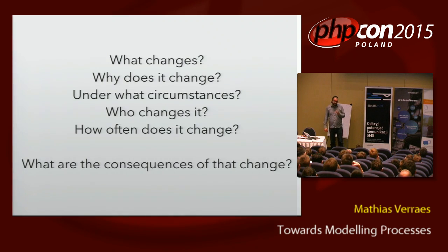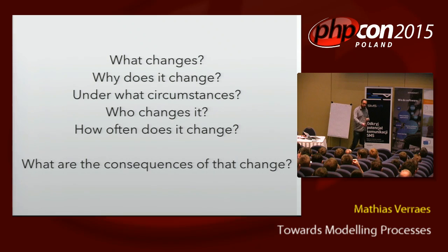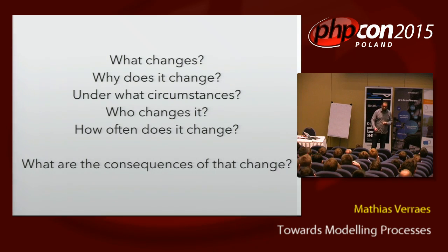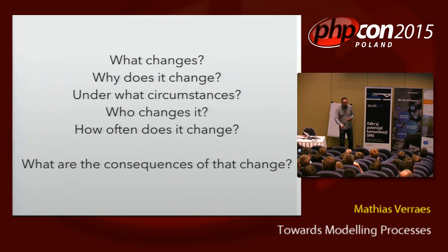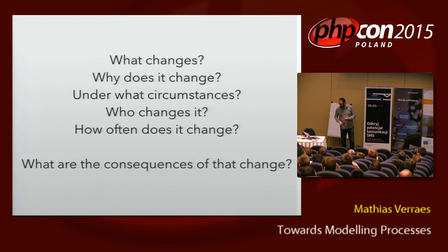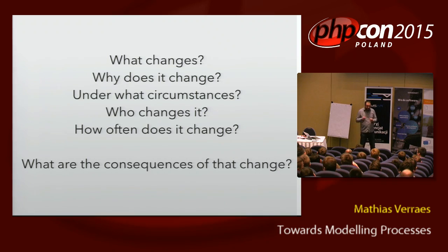The questions that interest me when modeling a problem and learning a new domain are not just what are the things and how do they relate — but what changes? How does it change? How often? Under what circumstances? Who's doing this change? And most importantly, what are the consequences of these changes? Because that becomes really invisible when you have boxes and arrows.